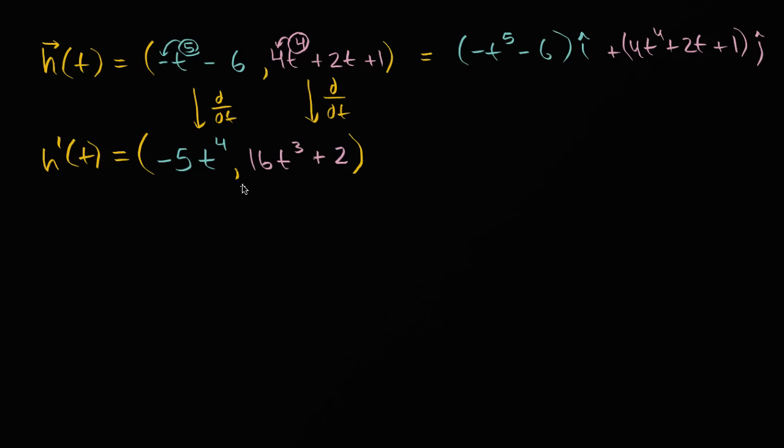And one way to do it, vectors can represent many, many different things, but the type of a two-dimensional vector like this, you could imagine this being h of t being a position vector in two dimensions. And then if you're looking at the rate of change of position with respect to time, well, then this would be the velocity vector. And then if we were to take the derivative of this with respect to time, well, we're going to get the acceleration vector.